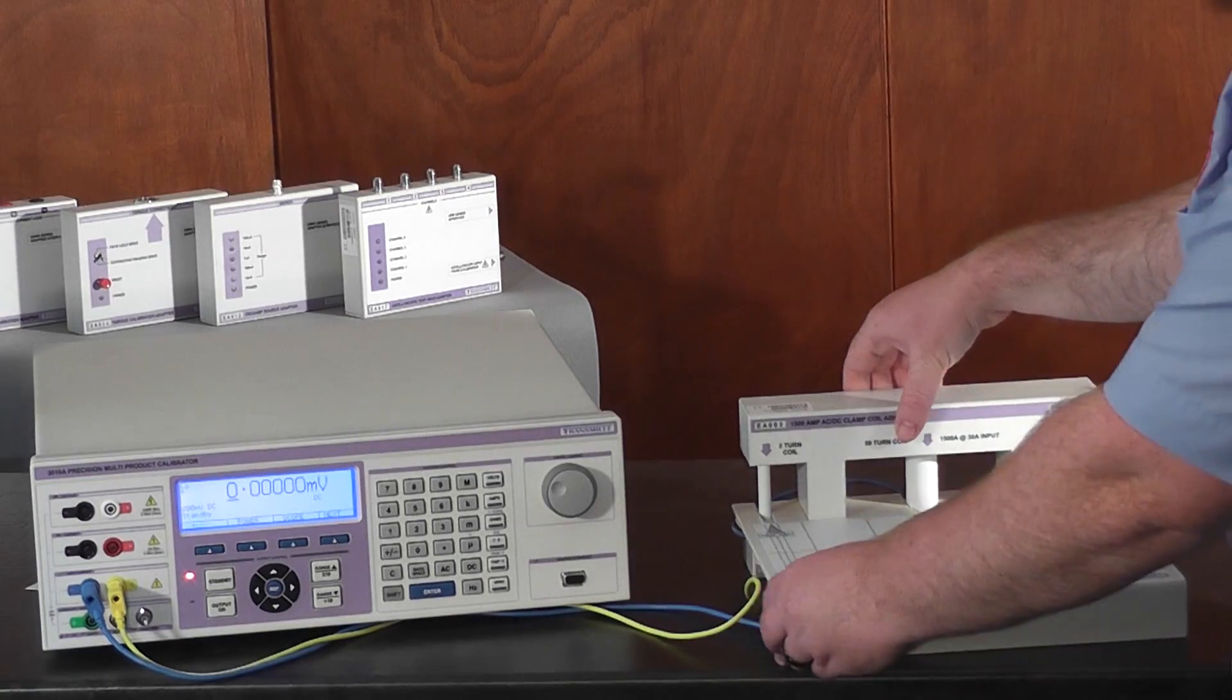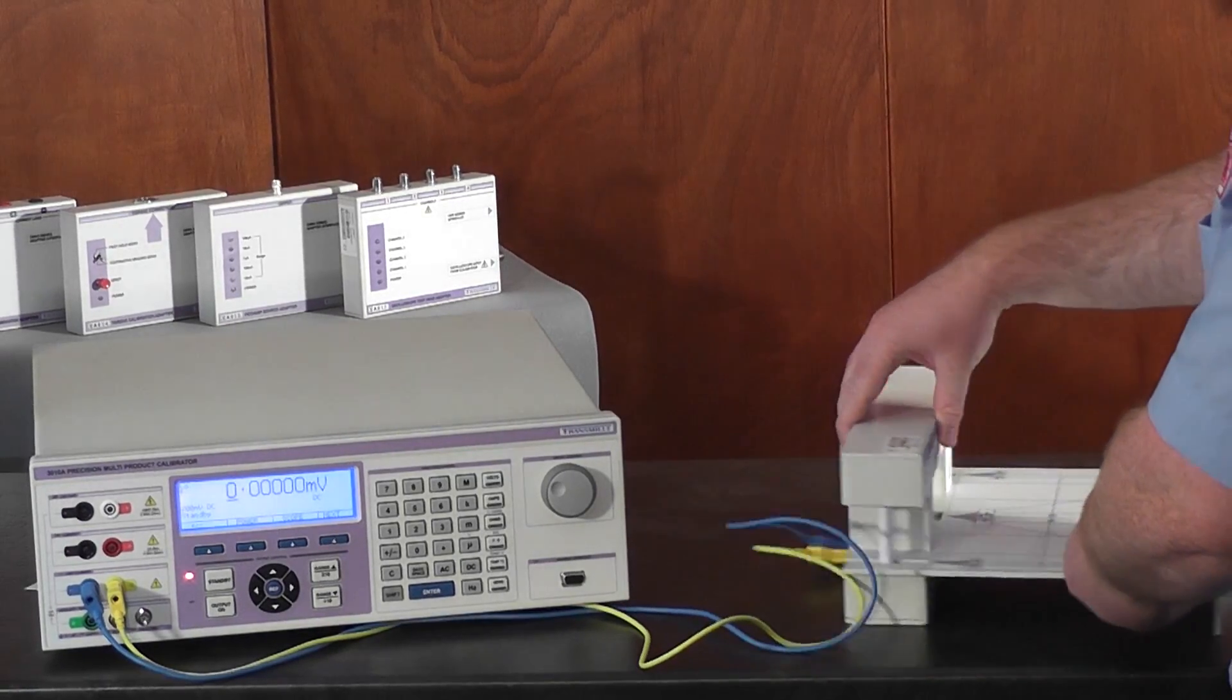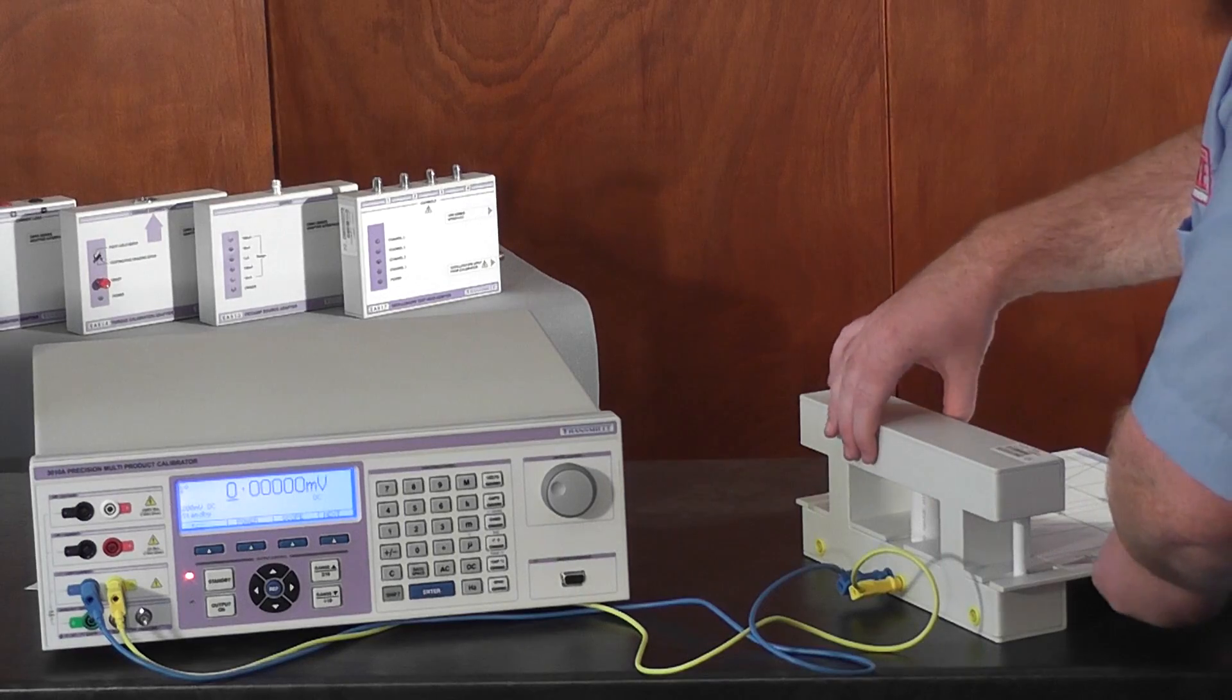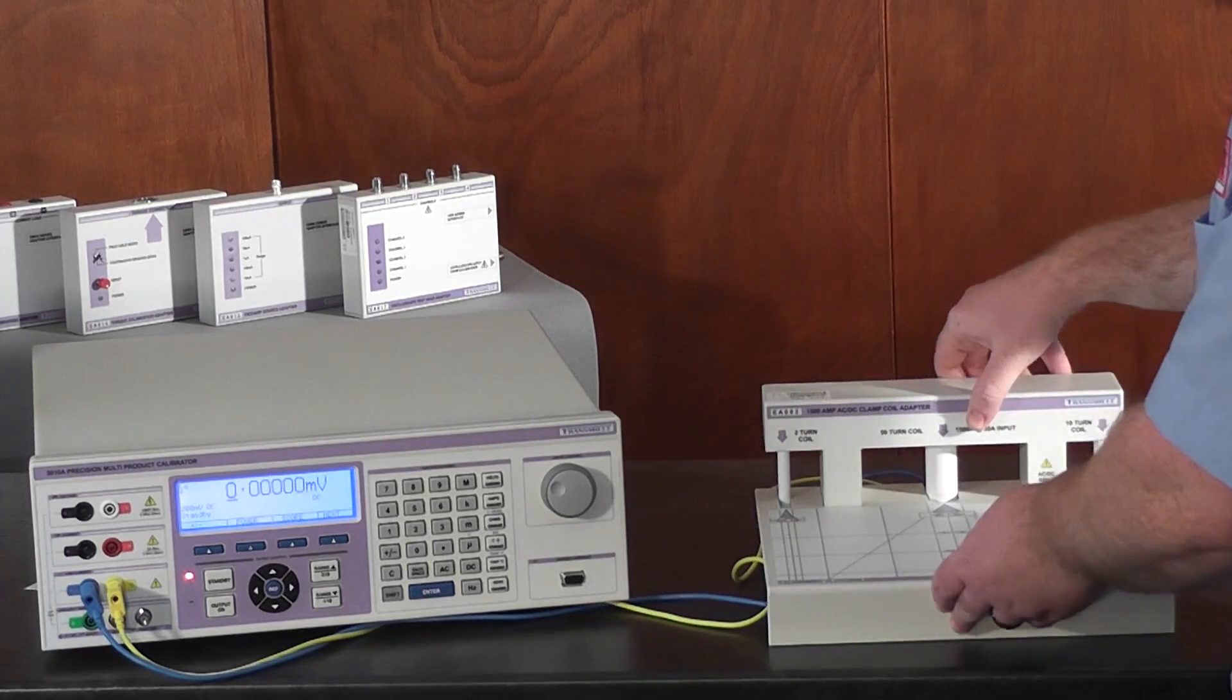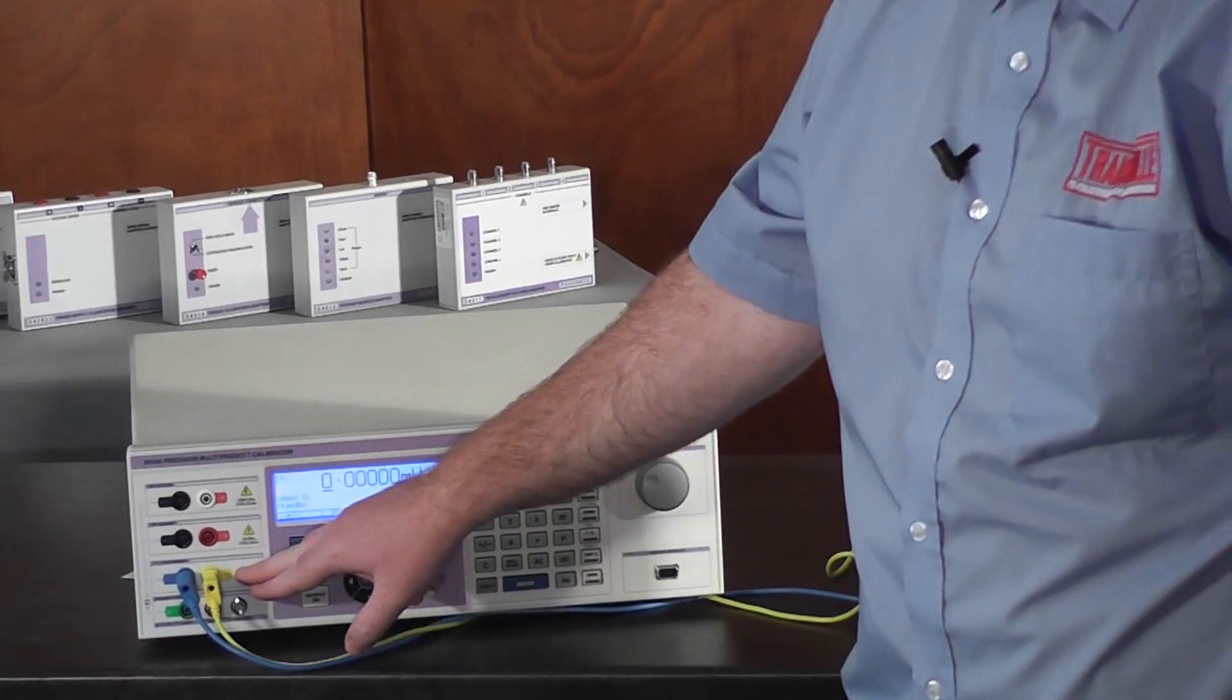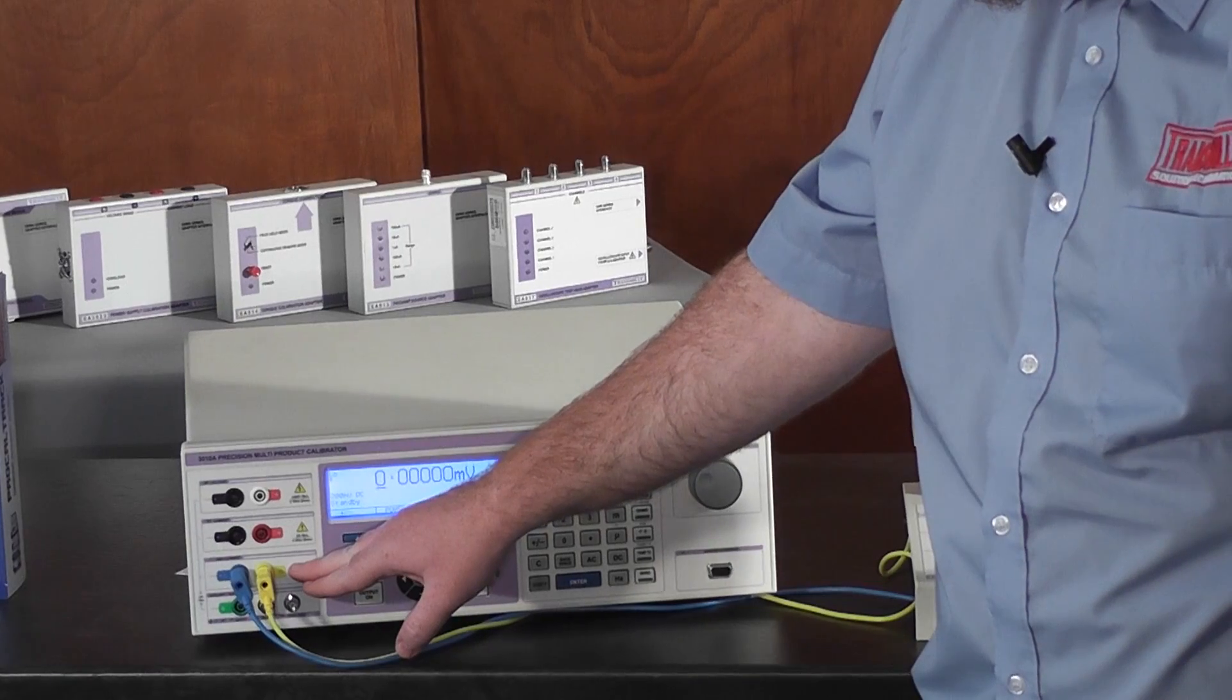Firstly, connect the calibrator to the correct terminals. Here I'm using the 50 turn input of the EA002 and connecting to the high current terminals of the 3010A.